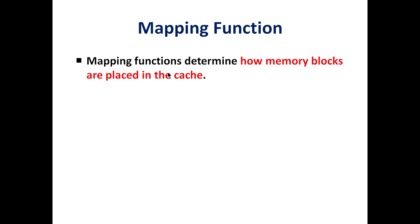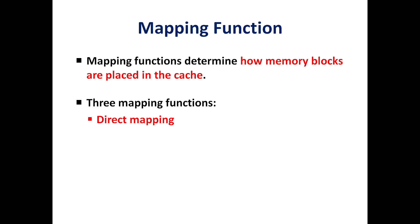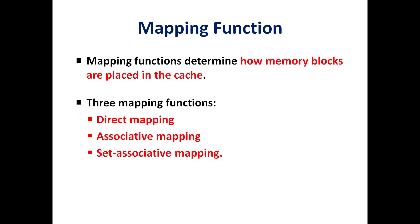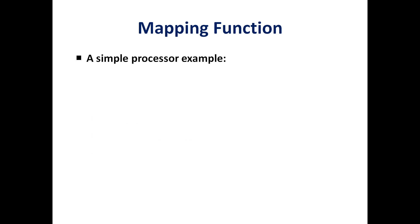The mapping function determines how memory blocks are placed in the cache. There are three types of mapping functions: Direct Mapping, Associative Mapping, and Set Associative Mapping. Let's take an example of these three mapping functions.